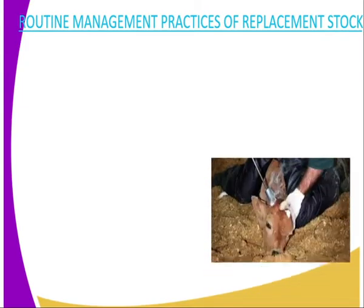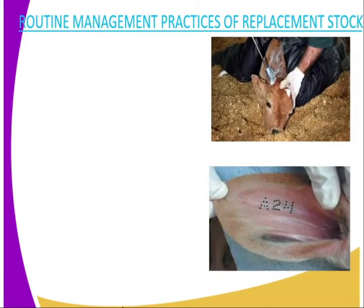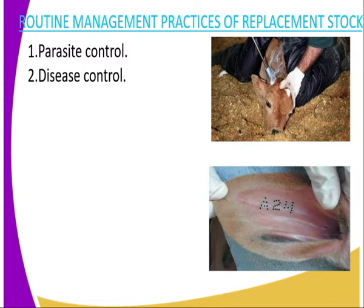Routine management practices on replacement stock: the first one is parasite control. We have two types of parasites — external parasites, or ectoparasites, and internal parasites. Both of them should be controlled effectively so that the young stock will grow in a good manner.